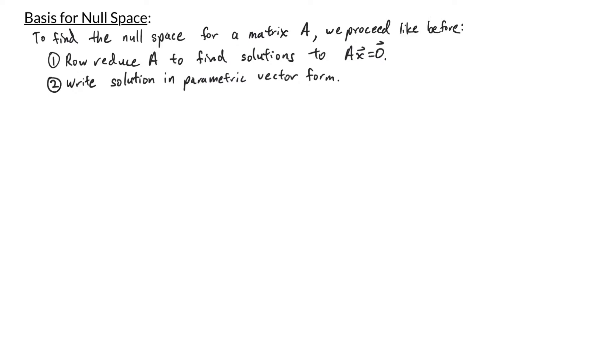Then you write the solution in parametric vector form. Once you have your solution in parametric vector form, you can write your solution as a span of vectors. Now those vectors will be the basis for the null space of A.